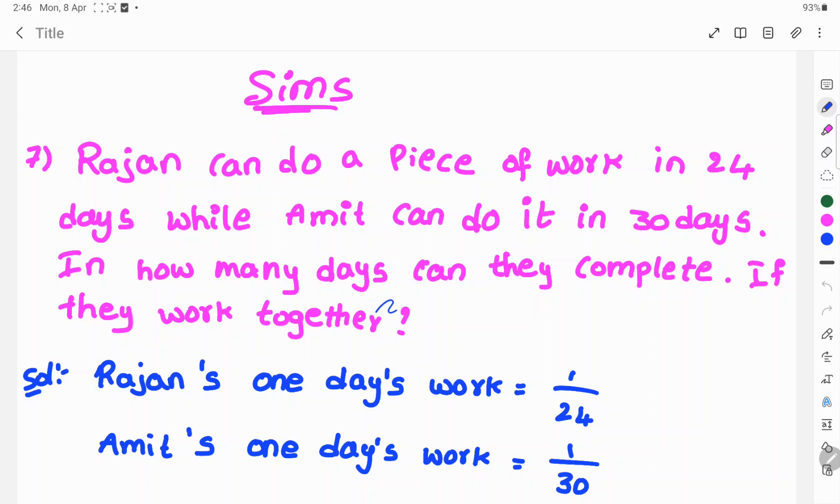Here you clearly understand the question. Rajan can do a piece of work in 24 days and the same work can be done by Amit in 30 days. So both together means both complete this work in how many days? So let's see the solution.